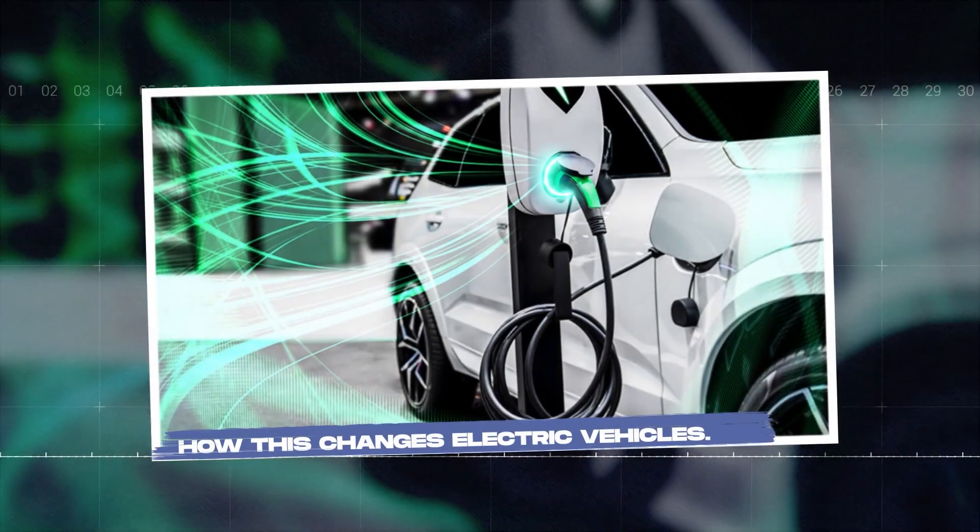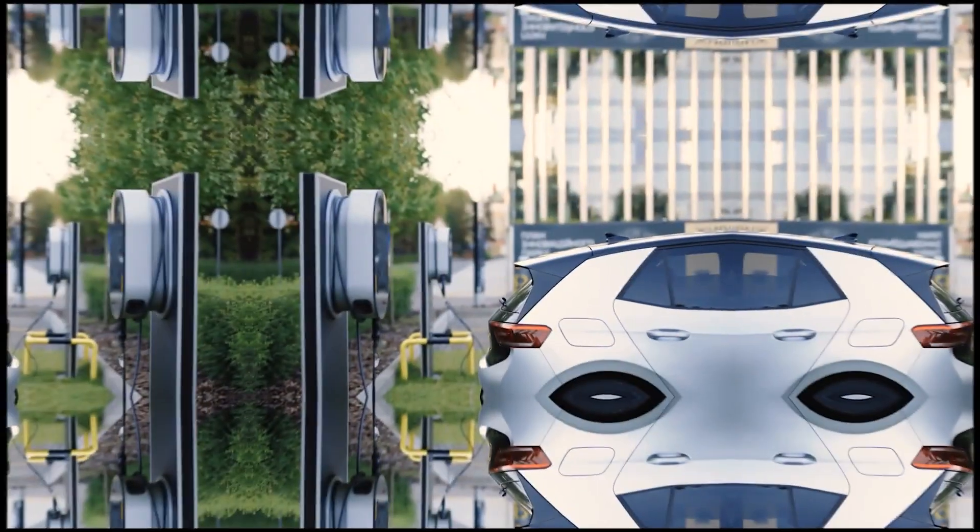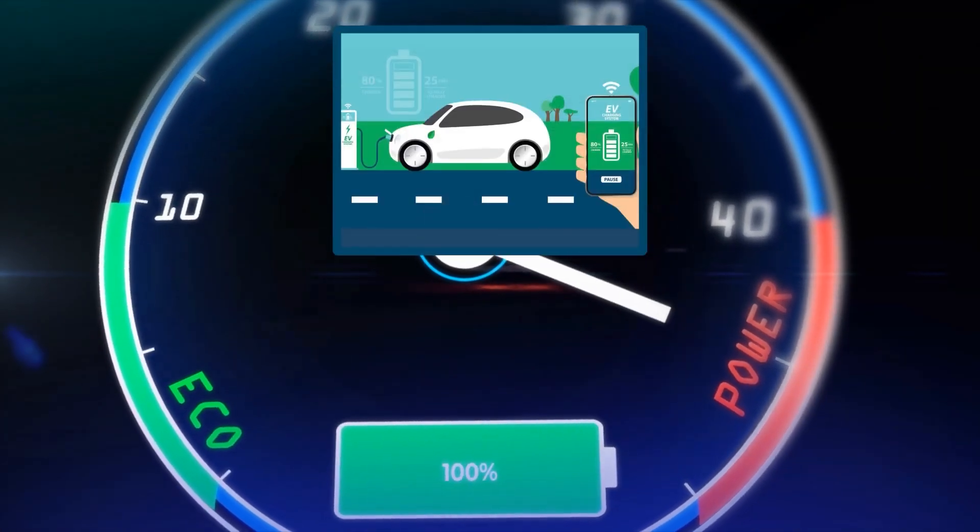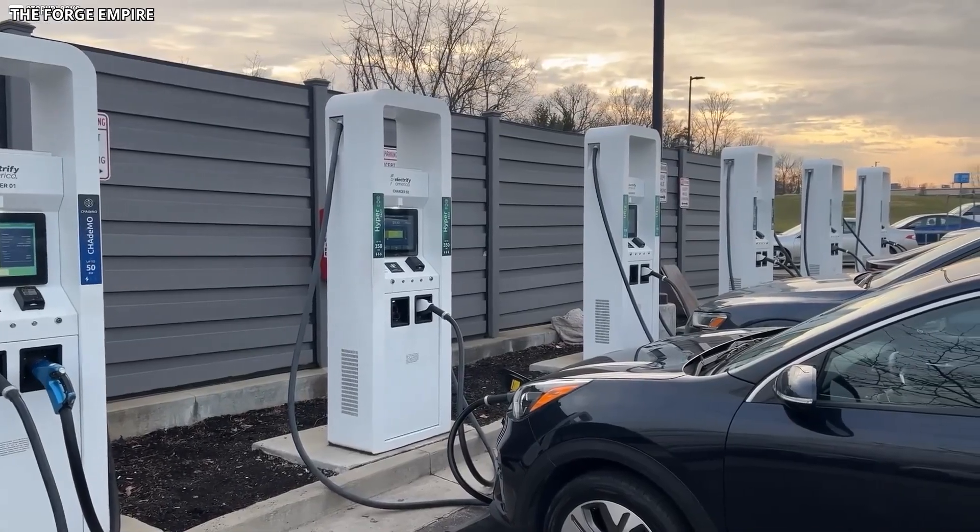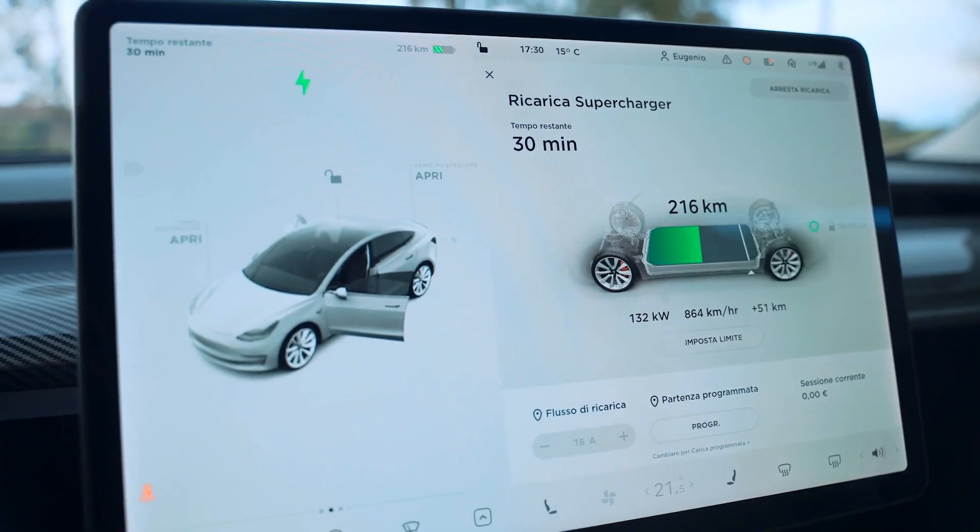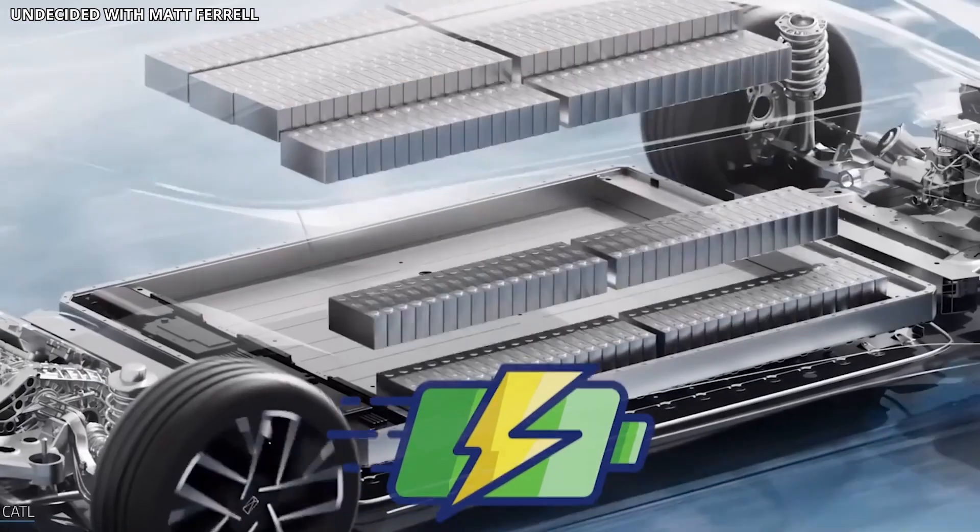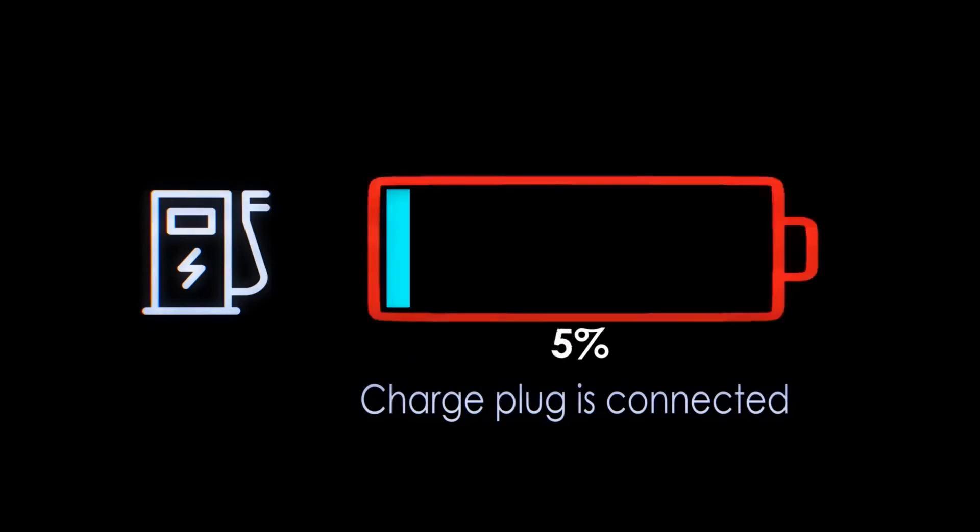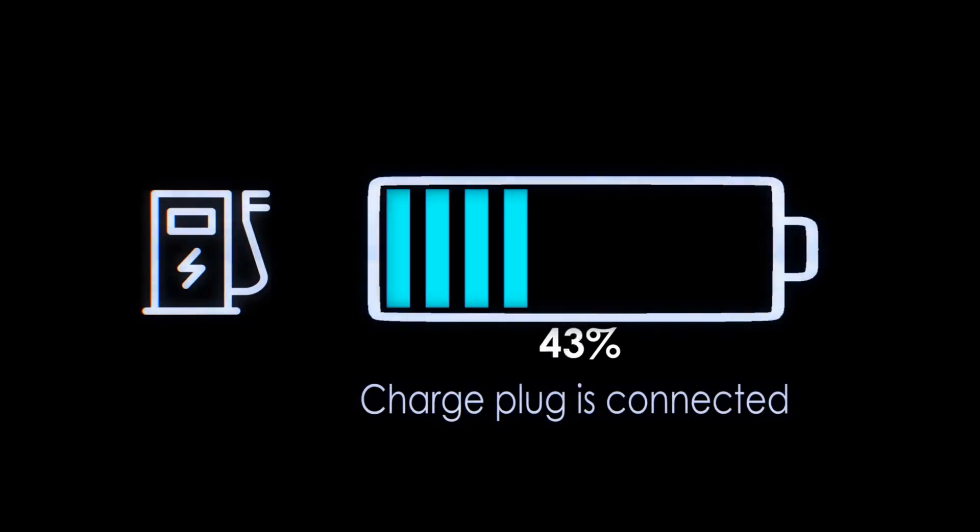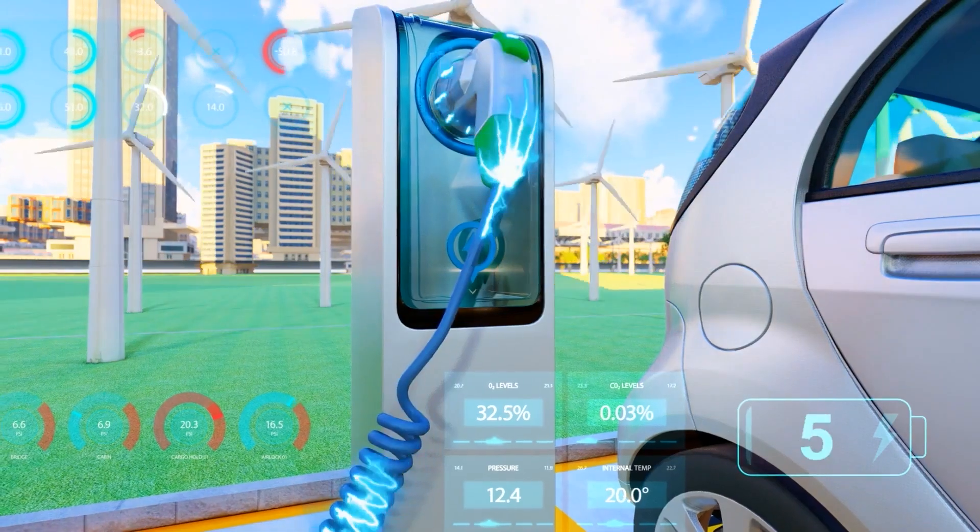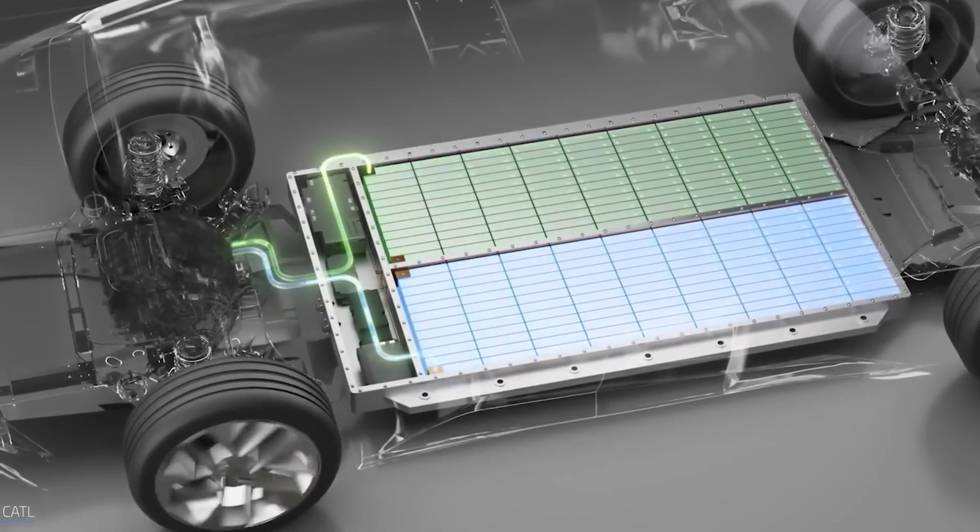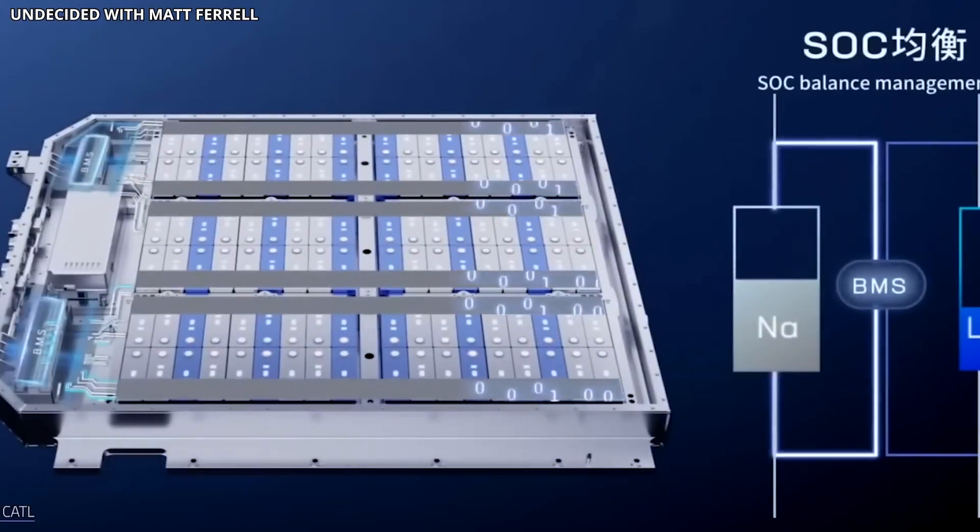How this changes electric vehicles. For electric cars, the impact is bigger. Charging time is one of the main barriers to EV adoption. Even with fast chargers, you're looking at 30 minutes or more to get a meaningful charge. Graphene batteries could cut that to under 10 minutes, making charging almost as quick as filling a gas tank. Range would also improve. Higher energy density means more miles per charge without increasing battery size or weight. That's critical because batteries are heavy, and reducing weight improves efficiency and performance.